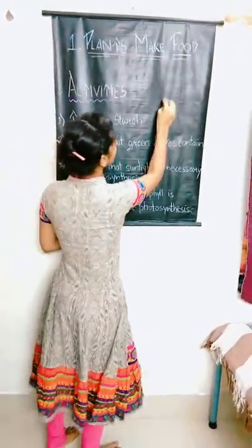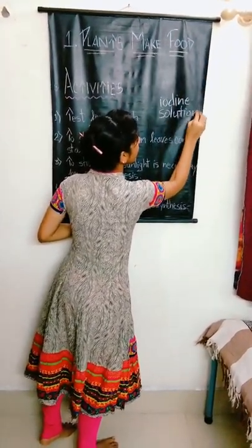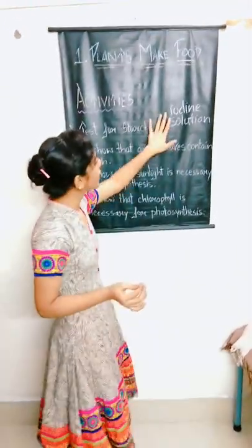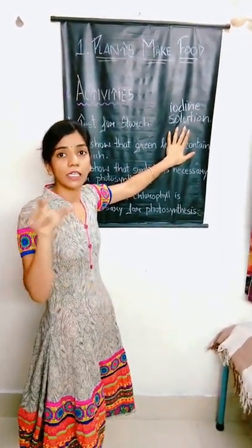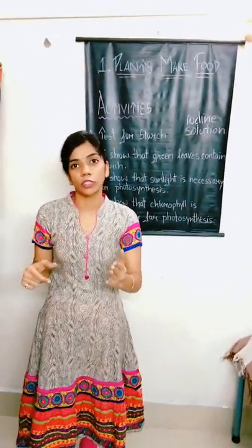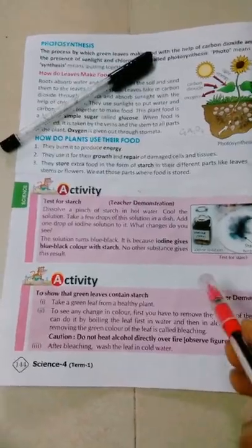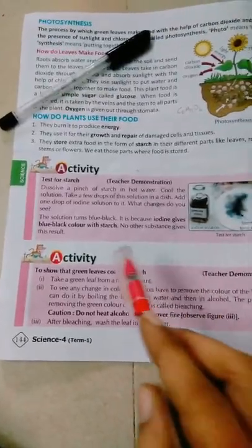हम आयोडीन सॉलीशन एड करेंगे, और वह आयोडीन सॉलीशन उस स्टार्च और वाटर के सॉलीशन को ब्लू-ब्लैक कलर में कनवर्ट कर देगा। यह इंडिकेशन है कि आयोडीन सॉलीशन स्टार्च के लिए महत्वपूर्ण है — अगर स्टार्च प्रेजेंट है, तो ऑब्जर्वेशन यह होगा कि वह चीज़ ब्लू-ब्लैक कलर में चेंज हो जाएगी।